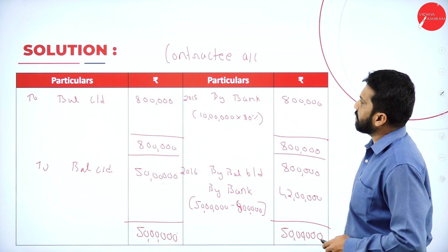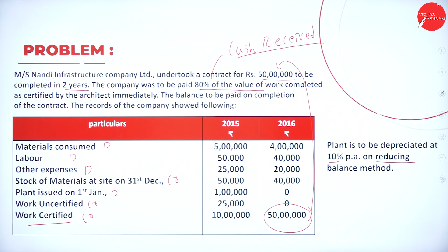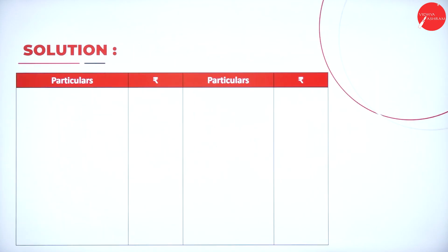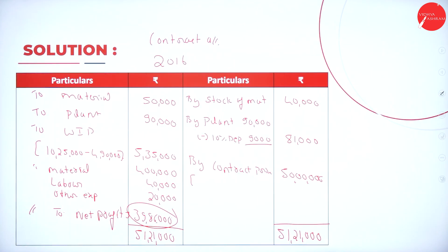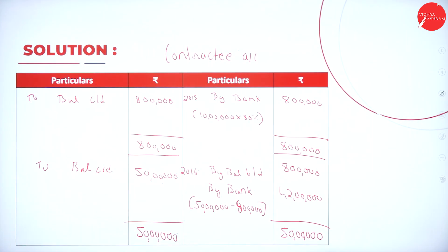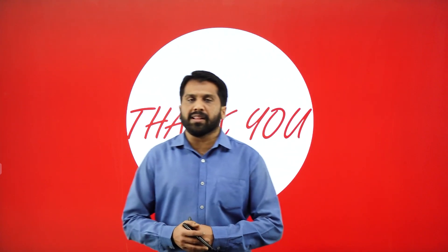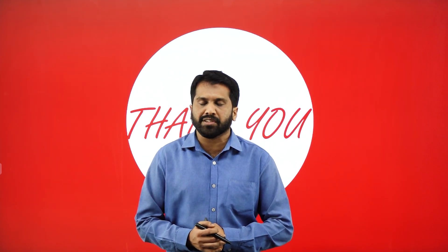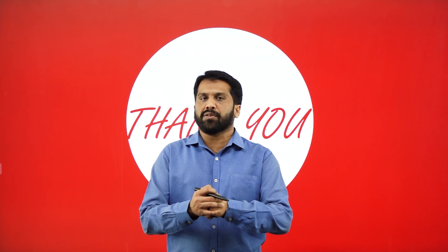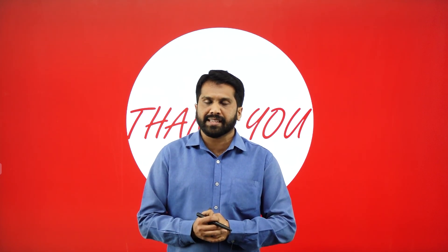Please take a screenshot of all. There is contract costing for 2 years: contract account first year, contract account second year, and your contractee account. This is all about today's session. We are done with methods of costing. Please work out at home. Thank you.